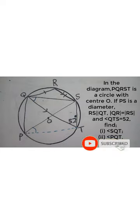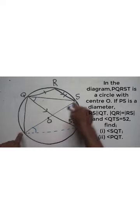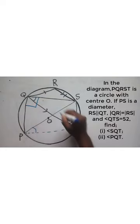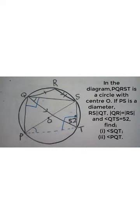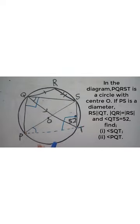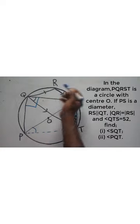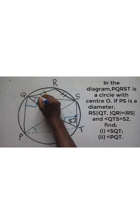From the diagram, I have been given the diameter — PS is the diameter, which is a chord that passes through the center of the circle. One of the circle theorems says that the angle subtended by the diameter on the circumference is always 90 degrees. Also, triangle QRS is an isosceles triangle because QR and RS are equal, so the base angles of that triangle must also be equal.